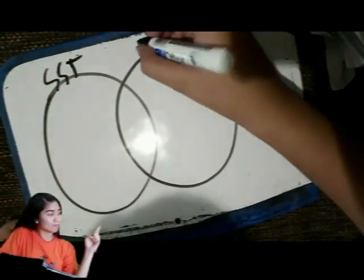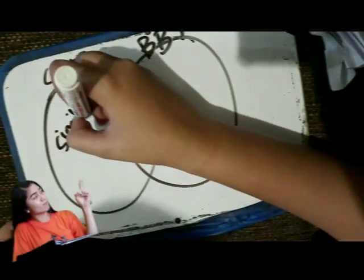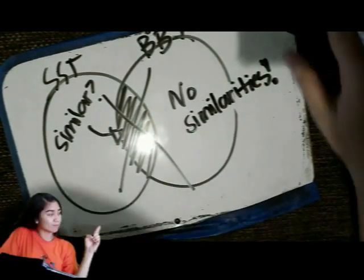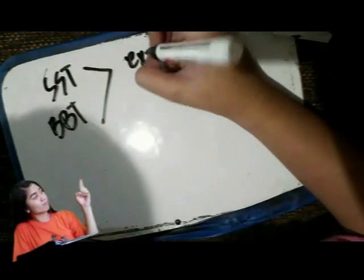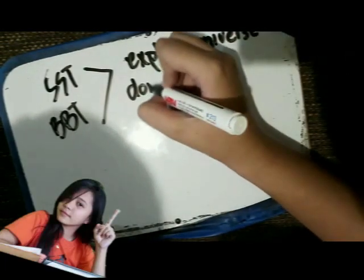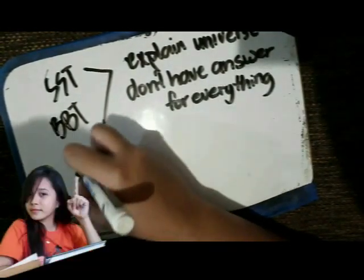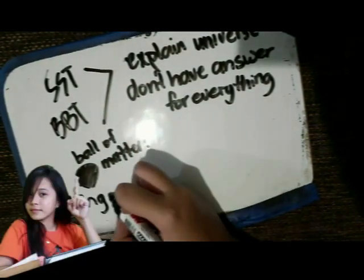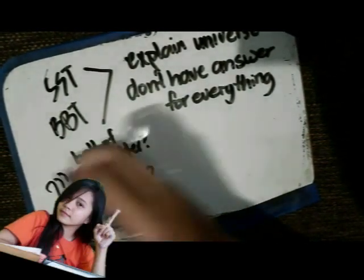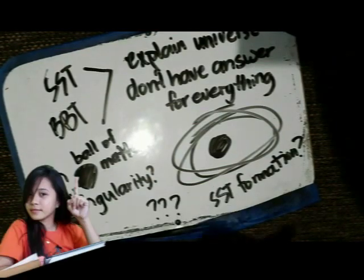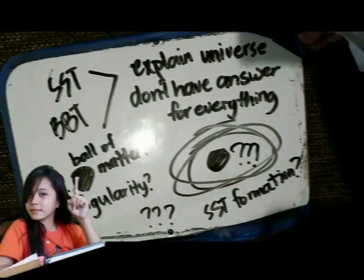We can say that there are no major similarities between the two theories — they are essentially complete opposites. The Big Bang theory states that the universe started because of an explosion, but the steady state theory contradicts that, stating that new galaxies are appearing without any explosion. The similarities between the two theories are few. Both theories explain the galaxy observations made by Edwin Hubble and Milton Humason. Each theory also has gaps — the Big Bang does not explain the initial ball of matter, and the steady state does not explain how the universe was first formed.